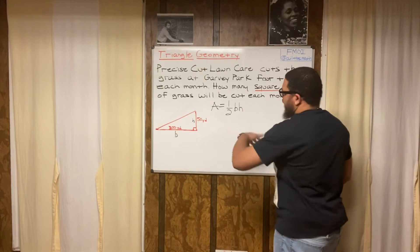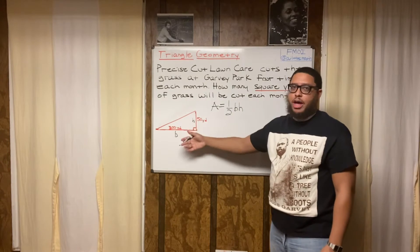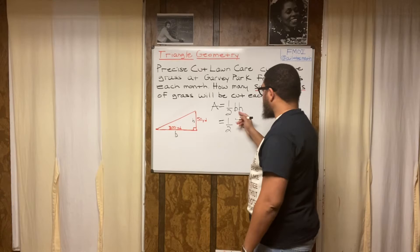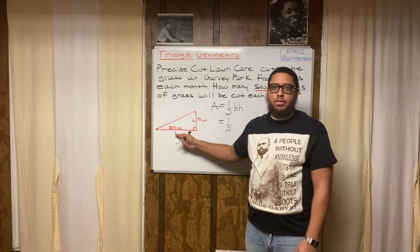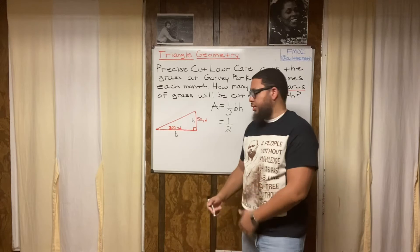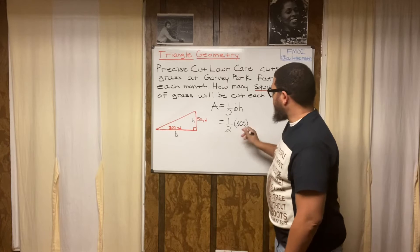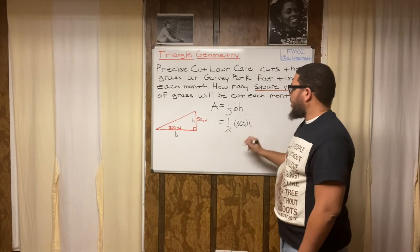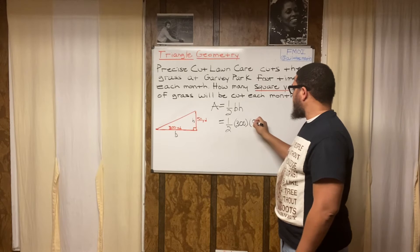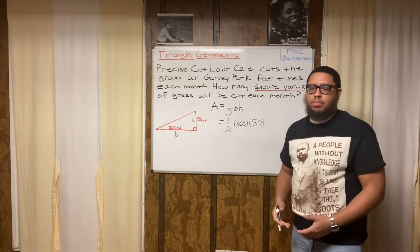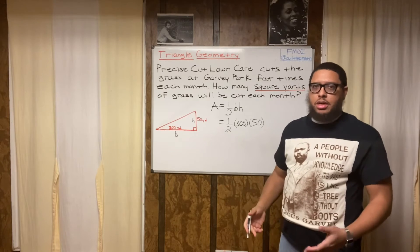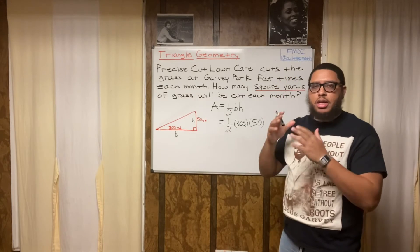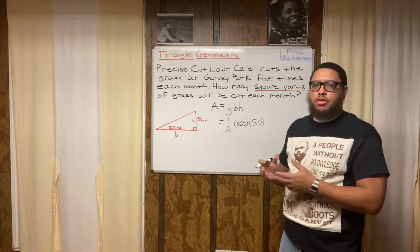Now I need to replace the letters with numbers. A equals one-half times B, but instead of B I substitute 300 yards, because the base is 300 yards. I put parentheses to show the separation between one-half and 300. H is the height, which is 50, so I replace H with 50. Whenever we use formulas, we always replace the letters with numbers — that's the integral step in the process.